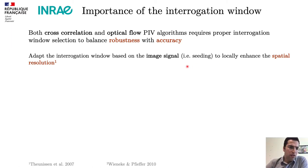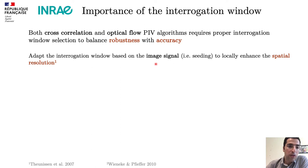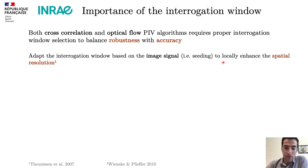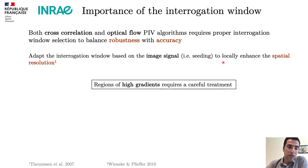An early study from Tennyson proposed that we can shape the interrogation window based on image signal — basically, where you have more particles you have more signal, so you can shape the window to locally enhance the spatial resolution. But our motivation is to focus on regions with high gradients.